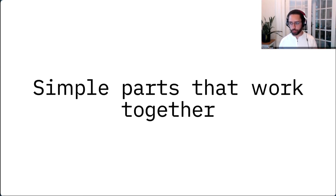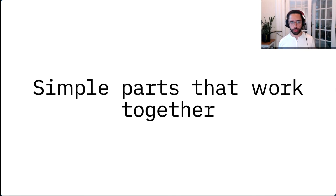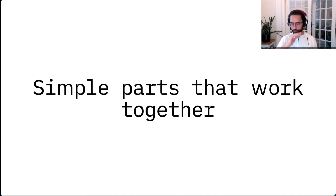Now that we've established that humans are the first priority, let's flip that around and argue for the opposite — the machine's perspective. One of the terminal's great strengths is that you can combine small programs to make bigger programs. With pipes and shell scripts you can put things together that the authors of those individual programs never imagined you might need to do — you can't really do that in the GUI world. This flexibility is only possible as long as those individual commands are designed to be simple parts that work together.